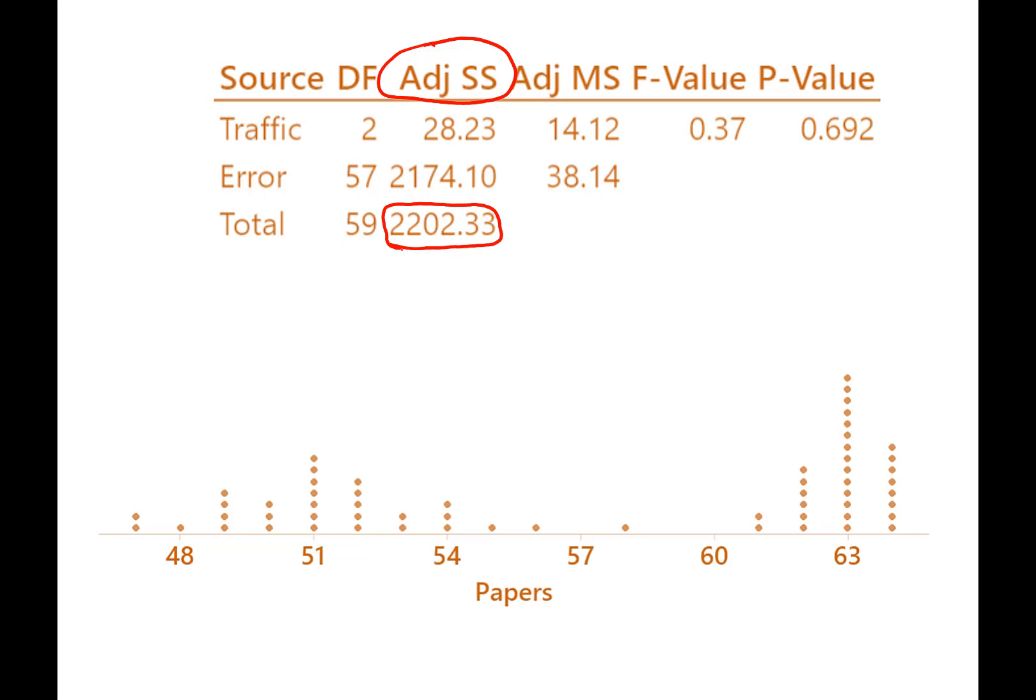If you were to look at, again, this is just the difference between each data point and the overall average for all the data points. You take that difference, you square it, you do that for every data point and you add them all up and you'll get 2200 and 2.33 as the sum of squares.